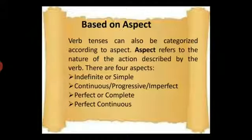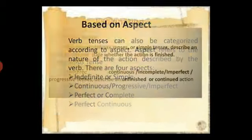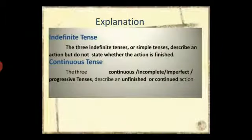Tenses can also be categorized on the basis of aspect. Aspect refers to the nature of the action described by the verb. There are four aspects of verb tenses: indefinite or simple, continuous or progressive or imperfect, perfect or complete, and perfect continuous. Let us now understand each of these four kinds of aspects.